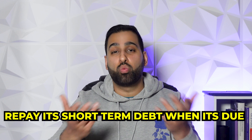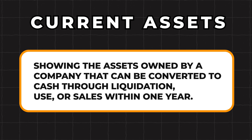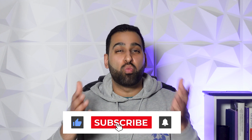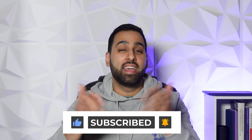When you're measuring liquidity, you need to be able to tell if the business can repay its short-term debt when it's due. Both inputs of this ratio assist you in this: number one, showing the assets owned by a company that can be converted to cash within one year, and number two, the company's short-term financial obligations due within the next 12 months. You should expect the ratio at minimum to be one, but more realistically around 1.5 — anything less indicates a company could have issues in the near future.